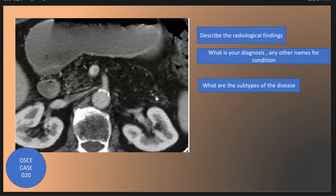Type 1A involves the head and spares the uncinate process. Type 1B involves the body and spares the uncinate process and periampullary region. Type 2A involves fatty infiltration of the head, sparing the uncinate process and periampullary region. Type 2B involves the total pancreas including the periampullary region.